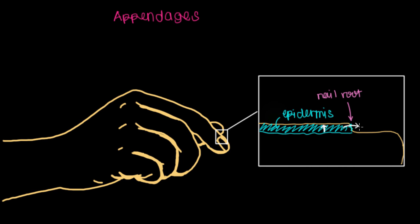You're going to have cells that come from the stratum basale, if you remember that term for the bottom-most layer of your epidermis, and you'll have some of the keratinocytes grow, die, and then eventually extend into the nail.